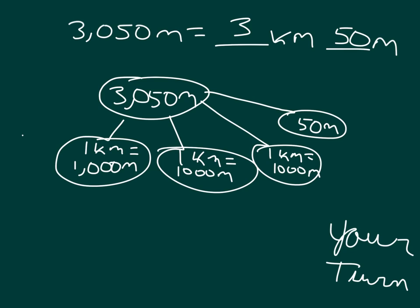Read the whole sentence with me. 3,050 meters equals 3 kilometers, 50 meters.